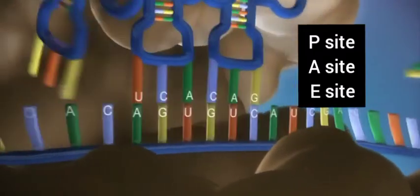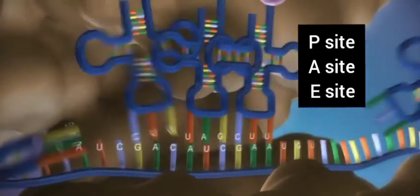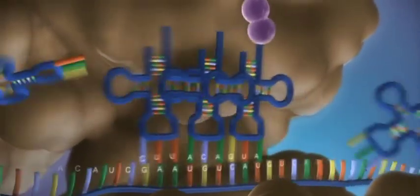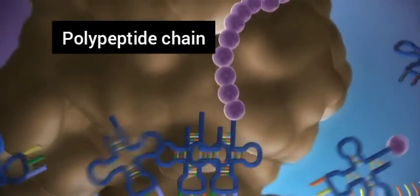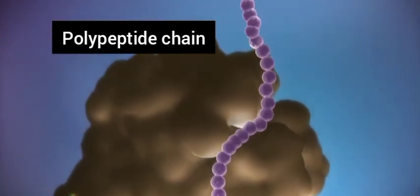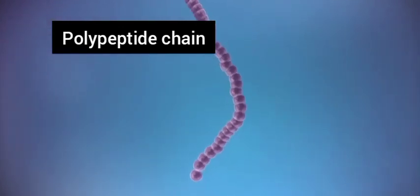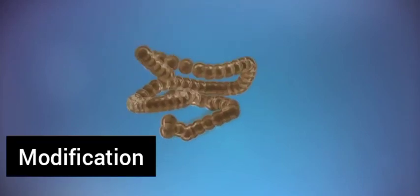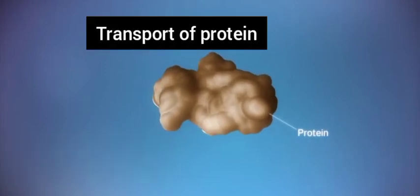Ribosome کے اوپر 3 sites بنتی ہیں: P site جہاں tRNA لگتا ہے، A site جہاں amino acids کے bonds بنتے ہیں، اور E site جہاں سے یہ emit ہوتے ہیں۔ اس طرح amino acids آپس میں bonding کرتے ہیں اور ایک پوری chain بنتی جاتی ہے۔ یہ کام تب تک چلتا رہے گا جب تک stop codon نہیں آئے گا — جب stop codon آئے گا تو chain یہاں سے complete اور release ہو جائے گی، اور پھر کچھ structural changes کے بعد ایک proper protein بن جائے گی۔ اس protein کو یا تو cell کے باہر بھیجا جائے گا یا cell کے اندر ہی use کر لیا جائے گا۔